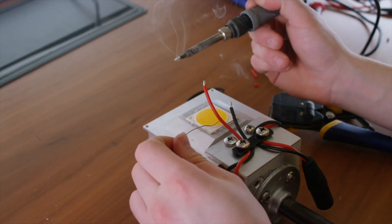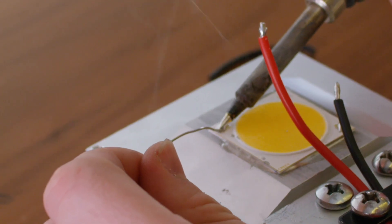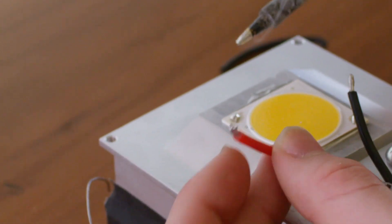So on these pads here, I'm soldering black to negative and red to positive. Just like always. So I've tinned the wires, I've tinned the pads, and now I can solder.